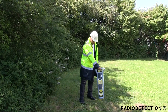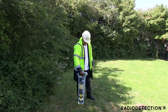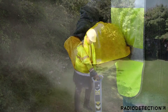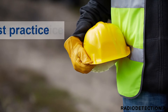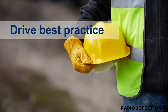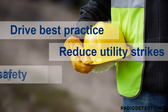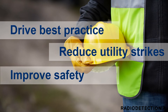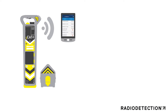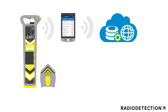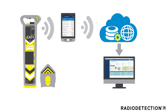Together with the G-CAT4 and GENI4, CAT Manager online is an internet-based remote management tool created to drive best practice, reduce utility strikes and improve safety. The new G-CAT4 can communicate with the new CAT Manager Android and iOS mobile apps to transmit usage data to CAT Manager online.